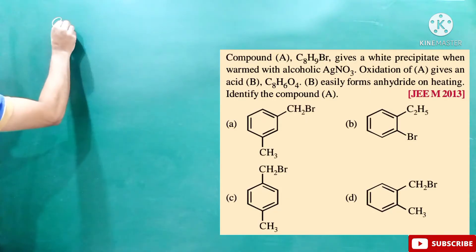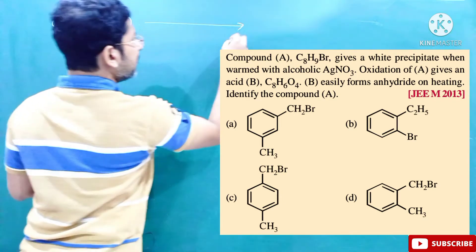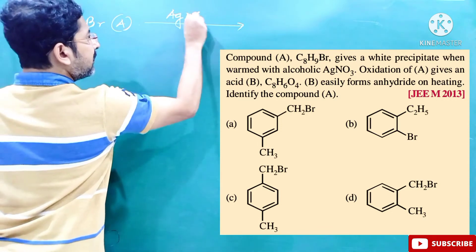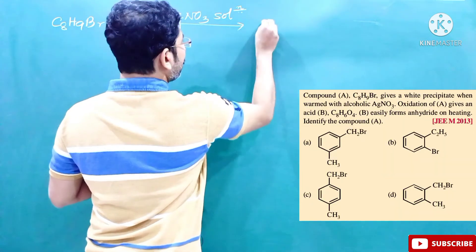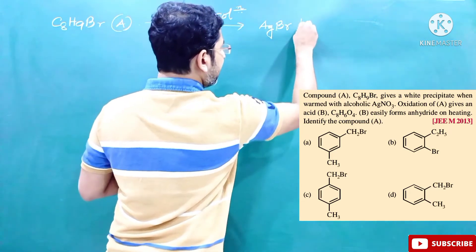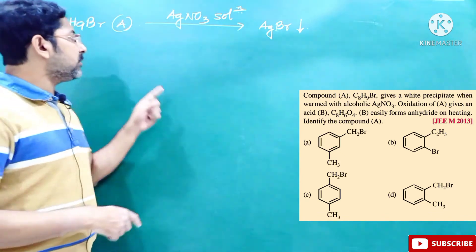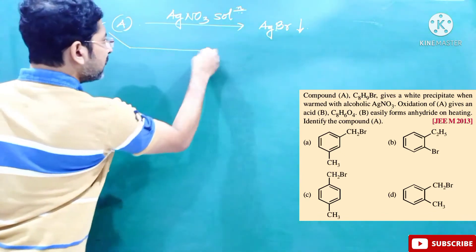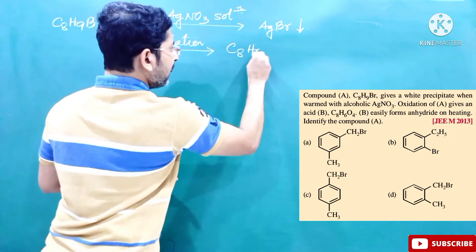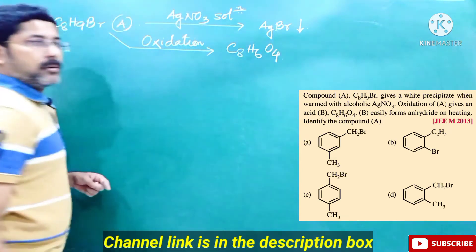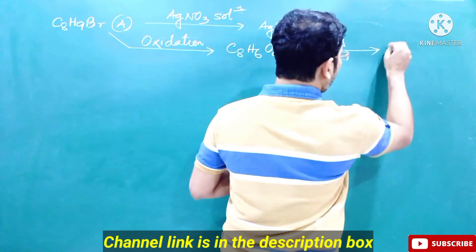The compound given is C8H9Br — that is compound A. This compound gives a white precipitate with silver nitrate solution, and the white precipitate will be of silver bromide. Another piece of information: this compound on oxidation gives us C8H6O4, denoted as compound B, and this compound on heating gives us an anhydride.